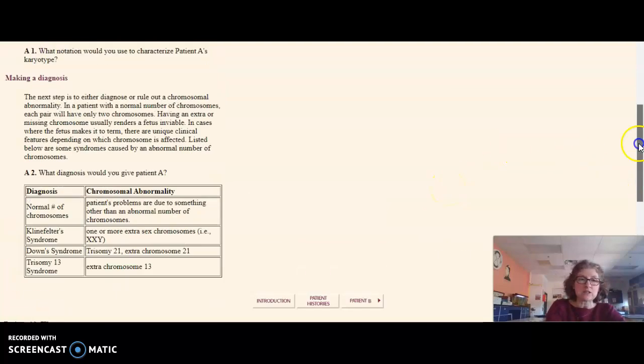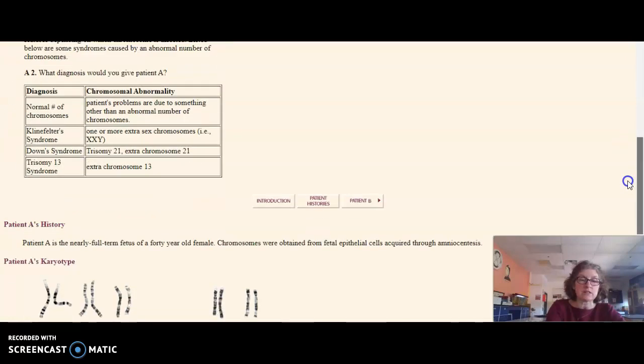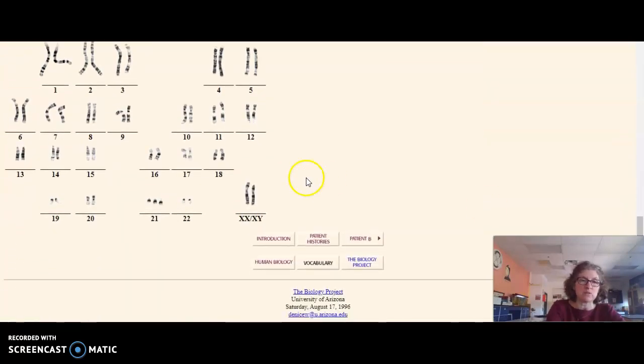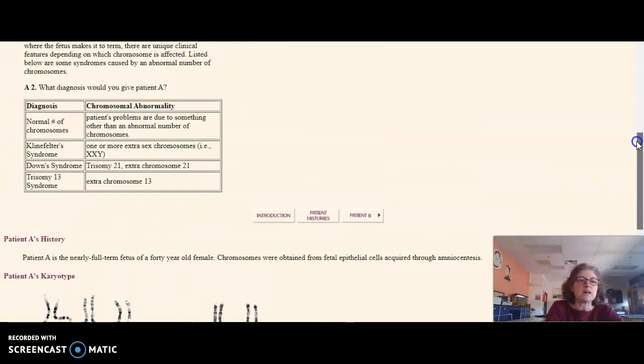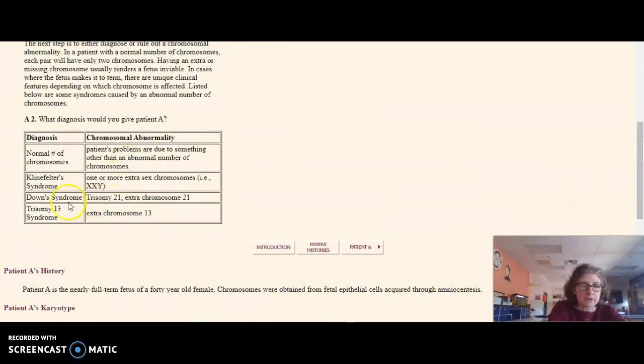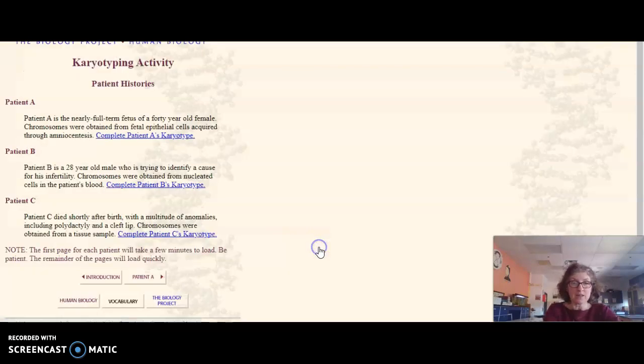How do you get back to complete and go to the rest of it? What you do is down here, once you've figured out your karyotype and you've figured out Down syndrome goes with trisomy 21, extra chromosome 21, you want to go to the next patient. You're going to go back to patient histories, and then it takes you back to A, B, C, and then you go into patient B and do the exact same thing again.